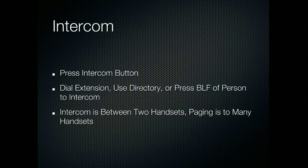Intercom is very easy to use. You just press the intercom button. You can then dial the extension, use the directory, or press the BLF of the person you want to intercom. A BLF is a one-touch button which will have their name on the right-hand side of your phone. Intercom is a two-way conversation between you and another handset. It often gets confused with paging, which is a one-way conversation to a group of handsets.